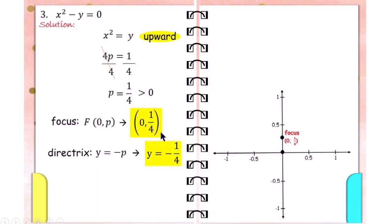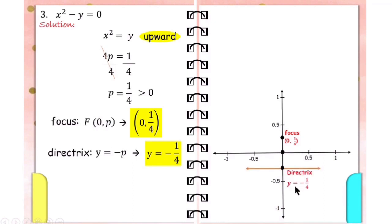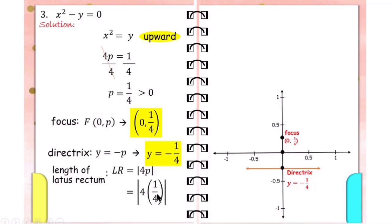Now let us find the length of the latus rectum. Replace p with 1/4 and multiply by 4. 4 times 1/4 is equal to 1. So the length of the latus rectum is 1. The axis of symmetry for an upward or downward parabola is x equals 0, and the endpoints of the latus rectum use the formula (−2p, p) and (2p, p), where 2p comes before p when the parabola opens upward or downward.